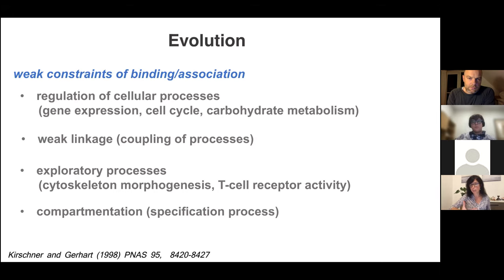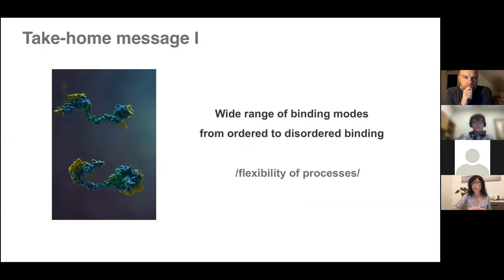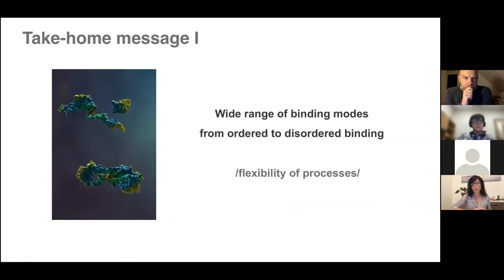These processes also include weak linkages—coupling between different processes—and exploratory processes like cytoskeletal morphogenesis or T-cell receptor activity, and also compartmentation. All of these require some kind of weak constraints on binding rather than the traditional way of thinking. The first take-home message: long before the IDP field emerged, we knew there is a wide range of binding modes from ordered to disordered, because of the biological logic and the flexibility of processes.